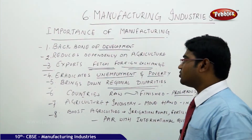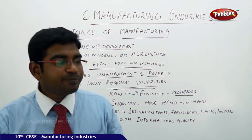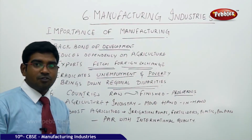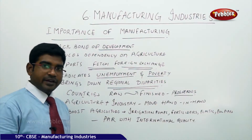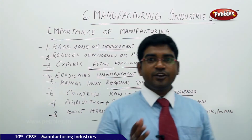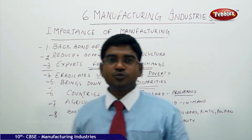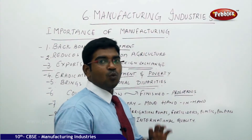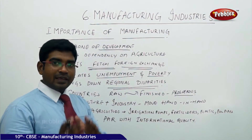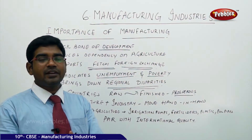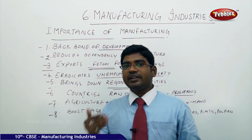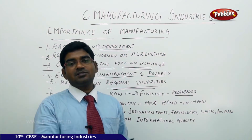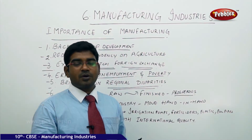In summary, manufacturing industries contribute a lot to a country's development. They are the backbone of development, reduce dependency on agriculture, generate exports and foreign exchange, eradicate unemployment and poverty, and bring down regional disparities. Countries using raw materials to make finished products earn huge profits and achieve a prosperous state. Agriculture and industries move hand in hand. Every industry must keep in mind global competition and maintain quality at par with international standards.